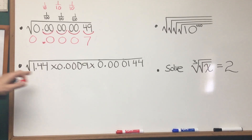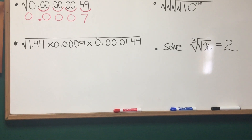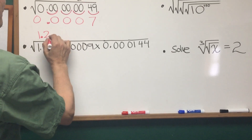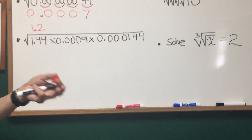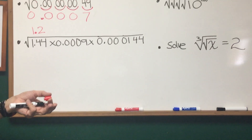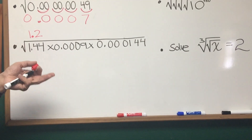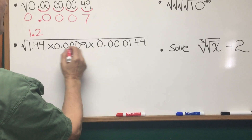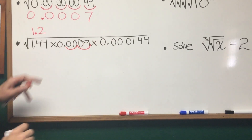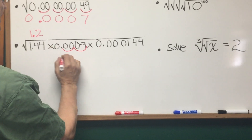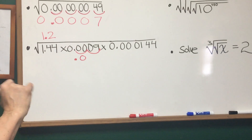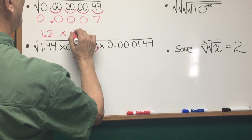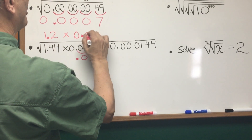Let's use that strategy in evaluating this square root of a product. The square root of 1.44 is just 1.2. It would be a good idea to memorize the perfect squares between 1 and 13, so you know that the square root of 144 is 12, giving 1.2. Now, what's the square root of 0.0009? Using our partitioning technique, I partition from the decimal place: the square root of two zeros is one-tenth, and the square root of 9 is 3. So this becomes 0.03.